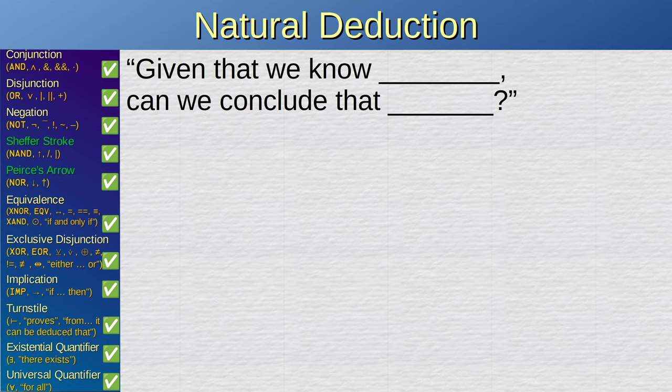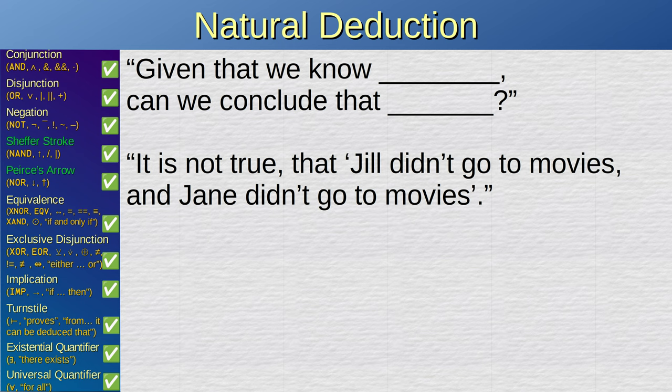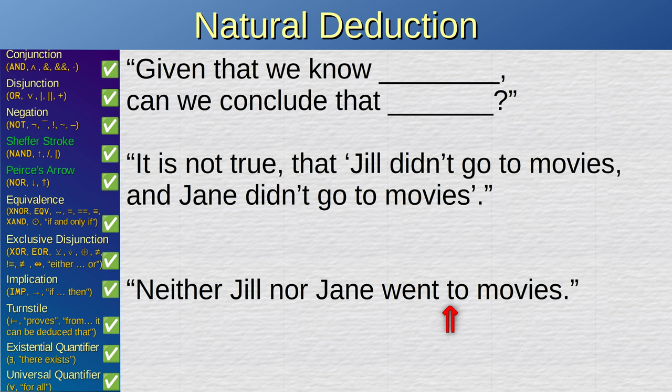Now, in the field of logic, one common question that often arises is, given that we know, can we conclude that? For example, suppose that we hear the claim, it is not true that Jill didn't go to movies and Jane didn't go to movies. Now, the English grammar is ambiguous here, so let's add single quotes to make clear that the not true part is about the entire sentence and not just the first clause. Now, does this sentence mean exactly the same as neither Jill nor Jane went to movies?